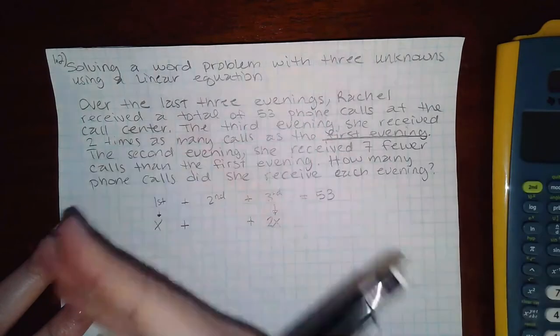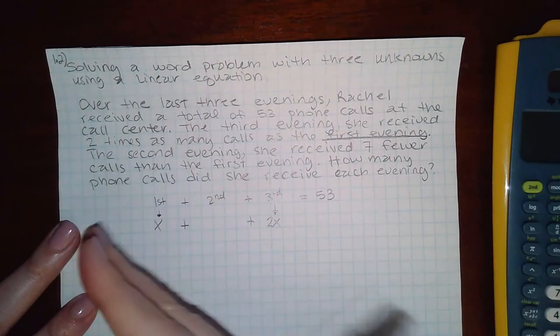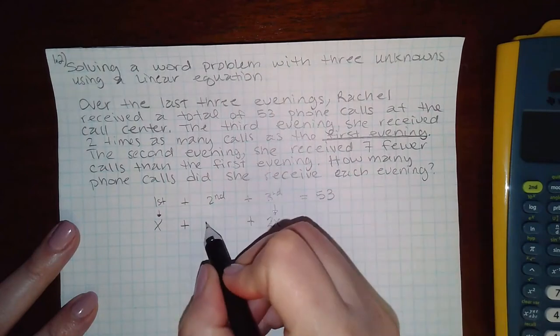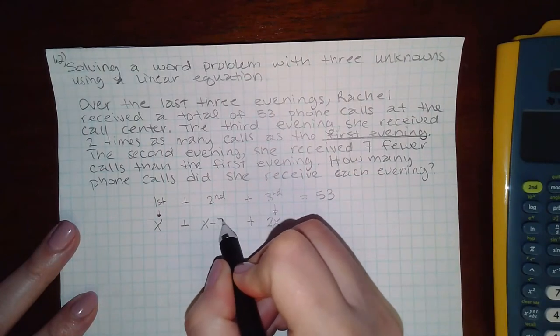So if I had 10 calls on the first day, then that means if I subtract seven, I'll have three calls on the second day. So this needs to be x minus seven.